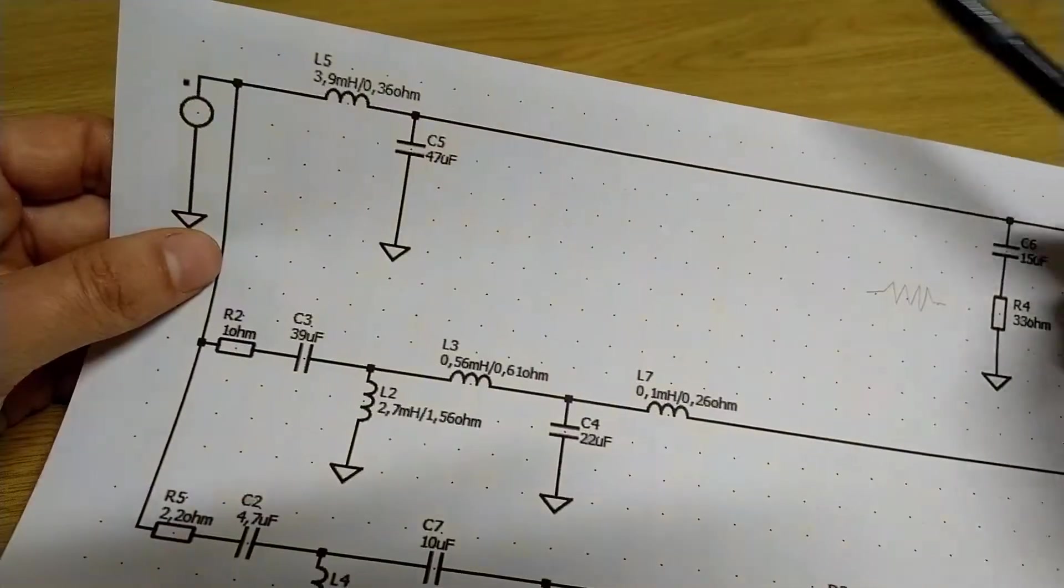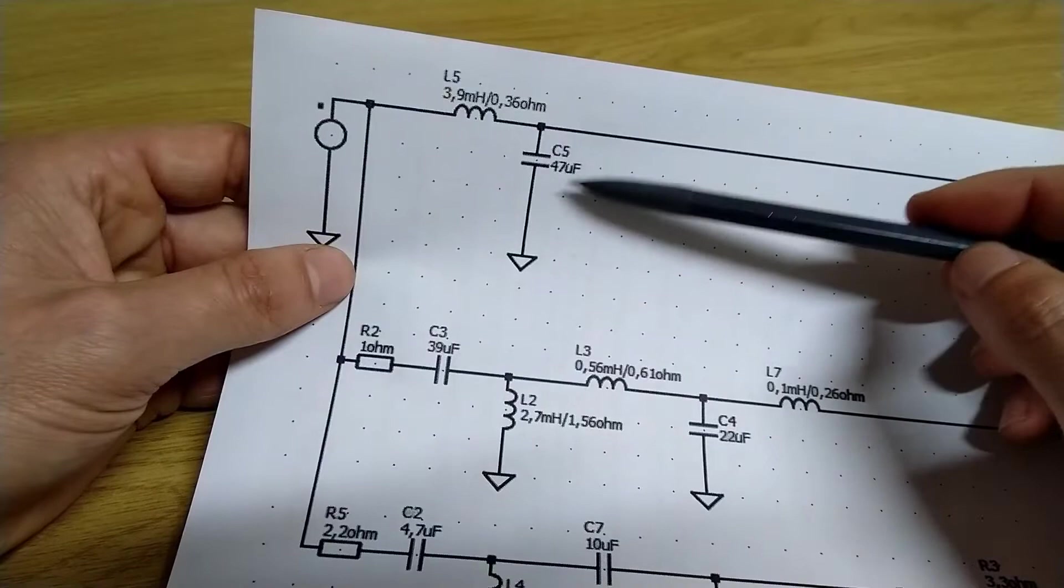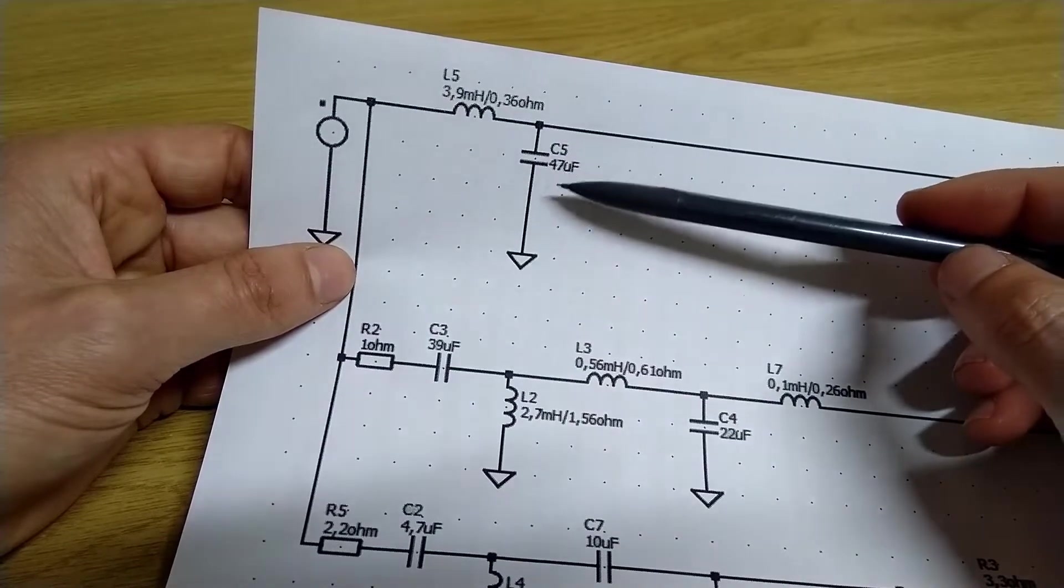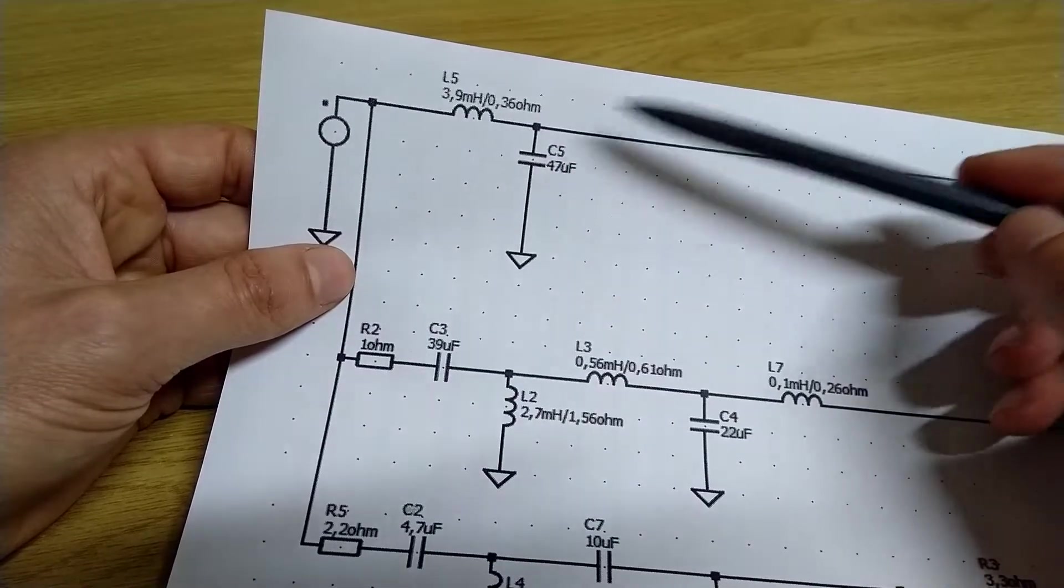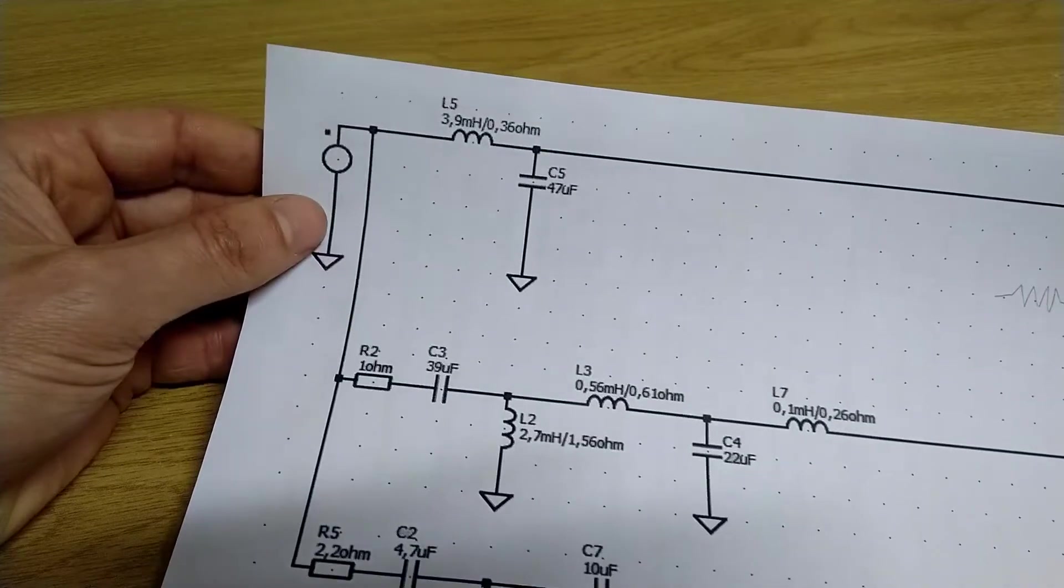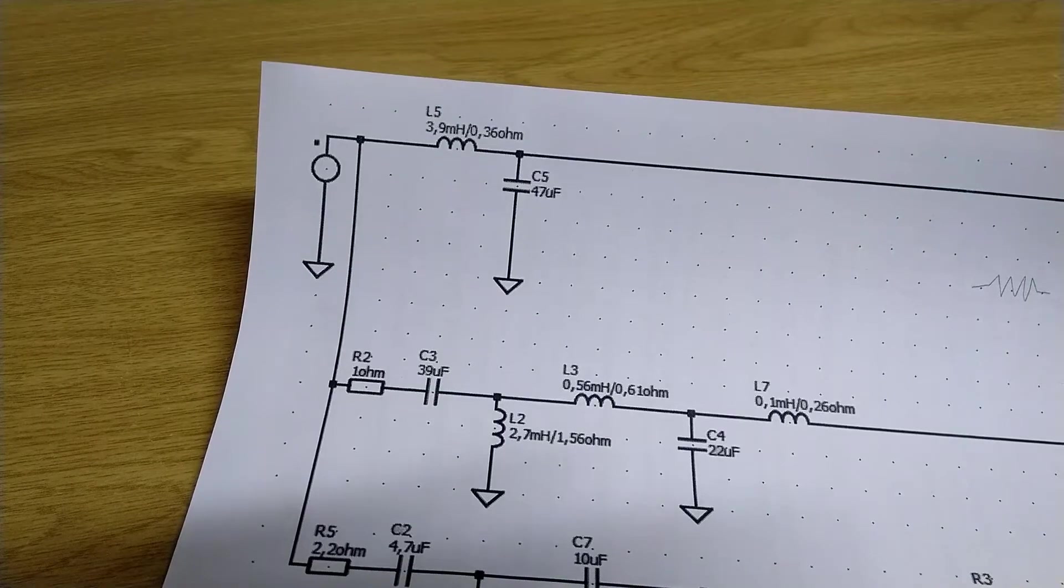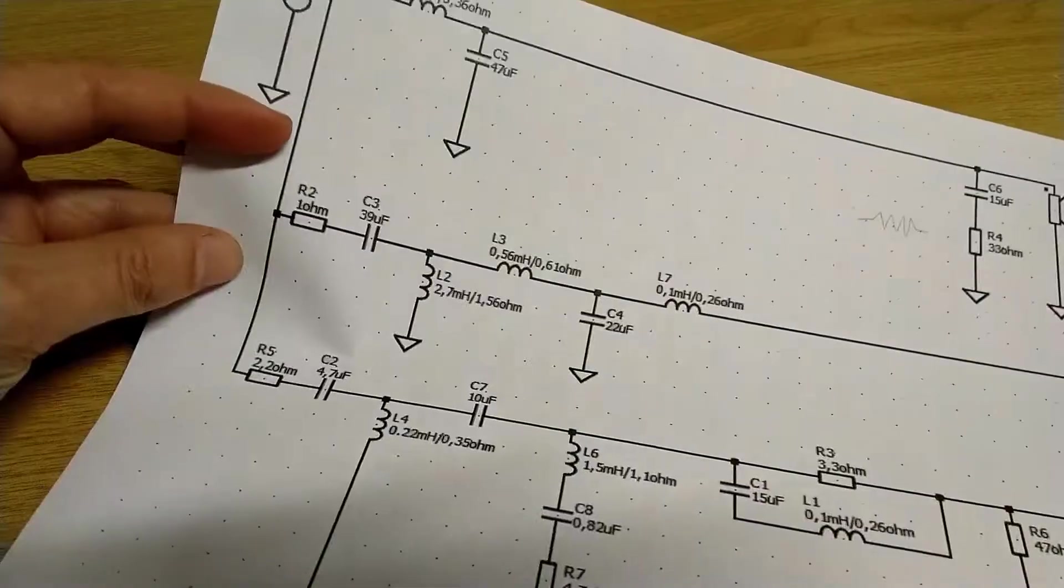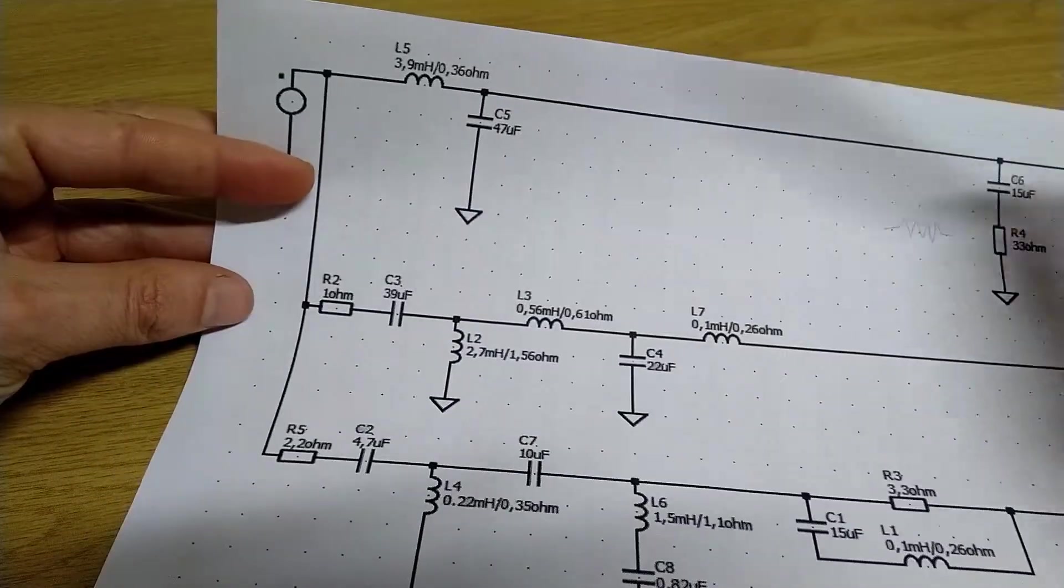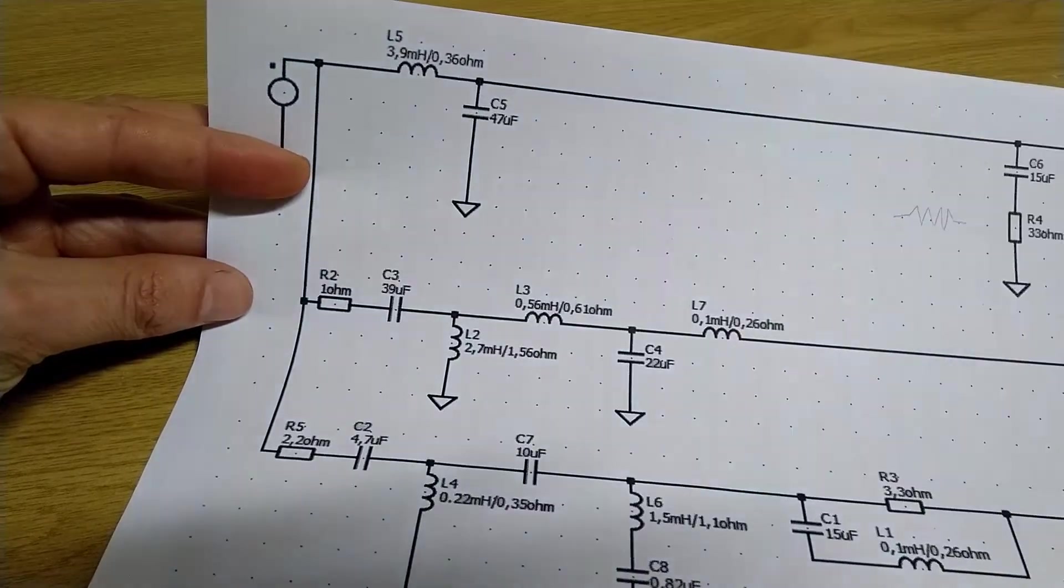What do we need to do though is take something like this massive capacitor C5. It's 47 uF - I believe that's microfarad - that's quite a large capacitor, especially if you're going to be using something like polyester or polypropylene. What do we do if we can't buy a capacitor of 47 uF?